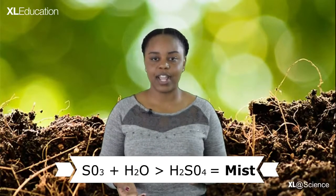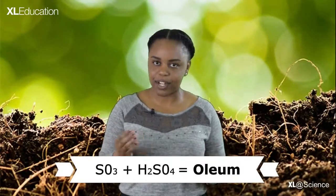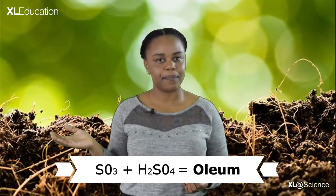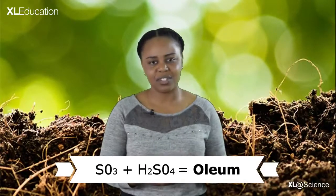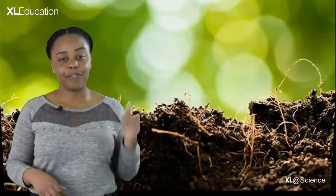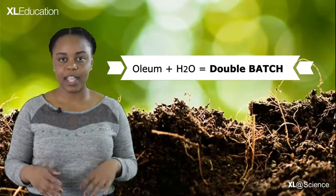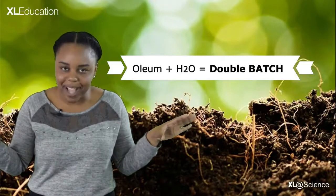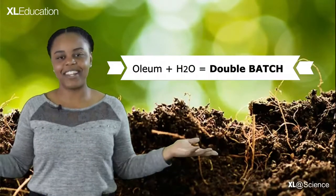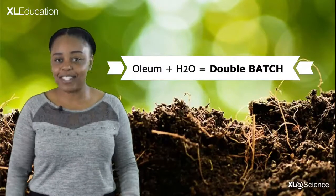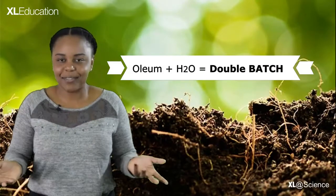So we'd rather react sulfur trioxide with sulfuric acid to form oleum. It does sound a bit strange to use sulfuric acid to form more sulfuric acid, but this is a Hollywood movie, so expect a happy ending. The final step in the contact process is oleum reacting with water, and this forms a double batch of sulfuric acid. We gave a little and got a lot!